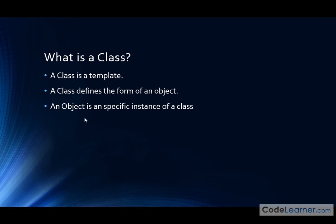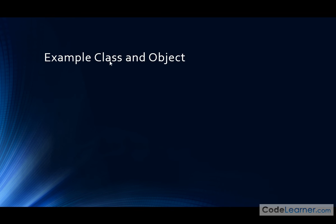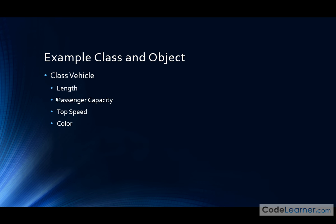So let's give an example of a class and an object. A class is the template, and an object is what you create from the template. Here's a class of something we're going to call a vehicle. Vehicles are the things you drive on roads — some are big, some are small, some are fast, some are slow, some are 18-wheelers. But they're all vehicles, so they share a common function that we call vehicle.